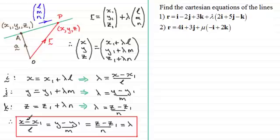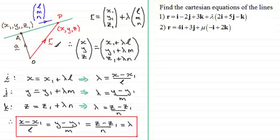This is the form I would encourage you to remember for the Cartesian equation for a line in three dimensions. Look at how it's built up: x, y, z represents any general point on the line; x1, y1, z1 are the coordinates of a known fixed point on the line; and l, m, n are the components of the vector that is parallel to the line.